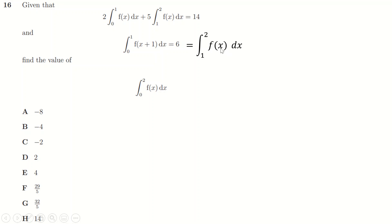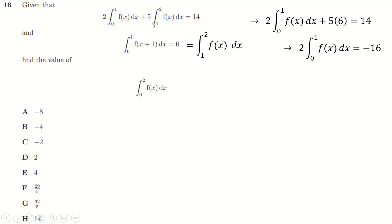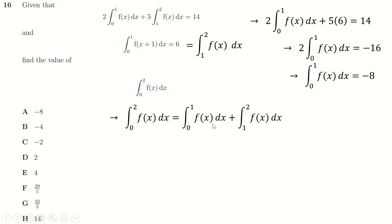Question sixteen: f(x+1) is f(x) shifted one to the left, so shifting the limits one to the left gives the same integral. Using this, I can write the integral of f(x+1) as the integral of f(x) over a shifted interval. Knowing the total equals 6, I solve for the integral of f over [0,1] as -8. Then the integral of f(x+1) over [0,1] equals the integral of f over [1,2] = 6, so the answer is -8 + 6 = -2.